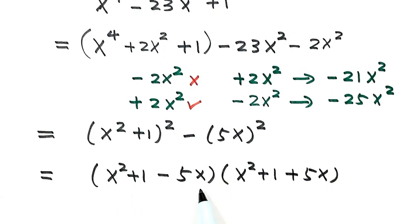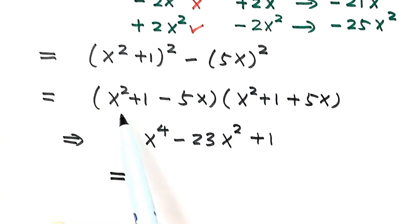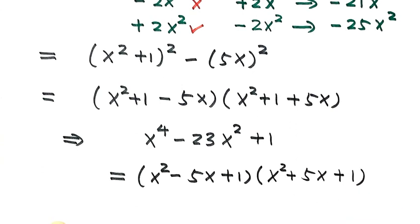Next, reorganize the terms inside each factor. So x⁴ - 23x² + 1 equals (x² - 5x + 1)(x² + 5x + 1). This is the answer for this question.